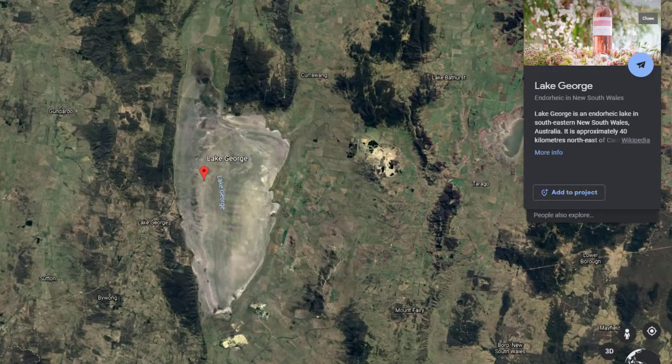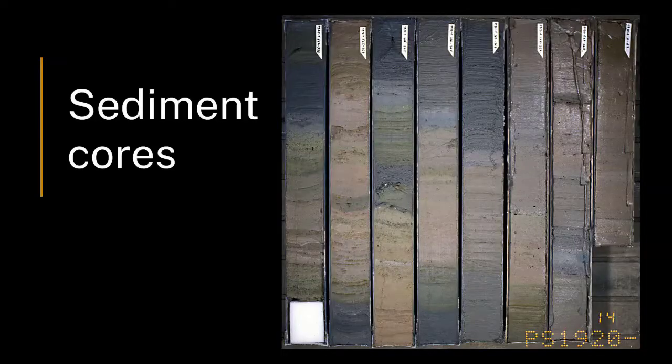We've had this research project going for several years to investigate the long history of Lake George. One of the sources of information on the long history of the lake, well beyond human history, is to take sediment cores from beneath the floor of the lake and examine the sediment, particularly for fossil pollen, which tells us about the vegetation that was growing at this site at times back — in this case, a few million years.